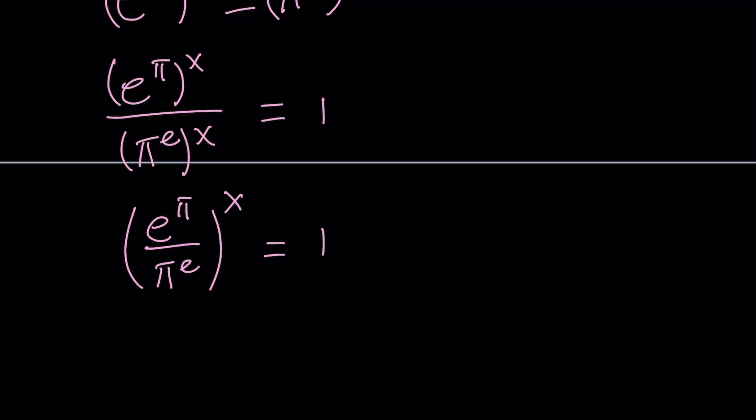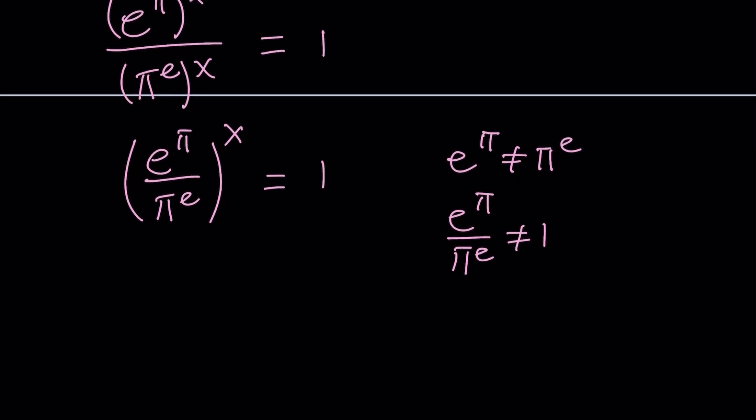Now we're thinking about when is something to the power x equal to 1. When the base is 1, when the base is negative 1 and the exponent is even, or if the exponent is 0 but the base is not 0. Obviously, in this case, the base cannot be 1, right? Because e to the pi and pi to the e are different things. Therefore, e to the pi over pi to the e can never be 1. So we have to take that out of the possibilities. So the only possibility that we're going to look at is that x equals 0.